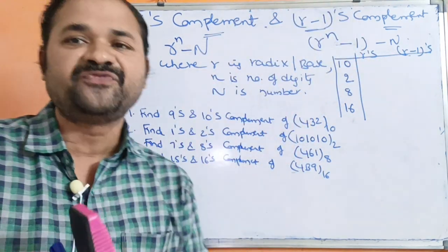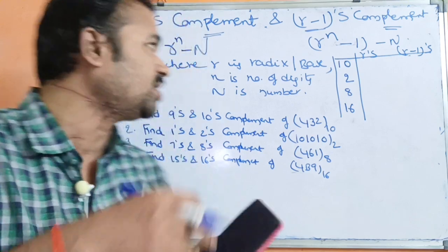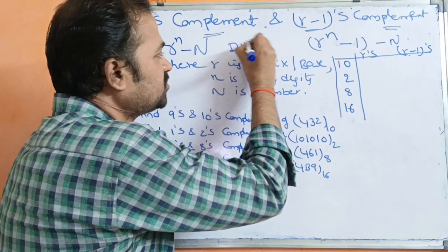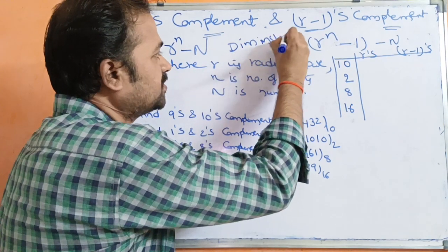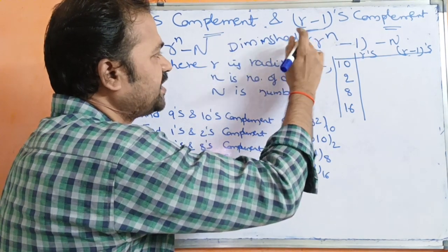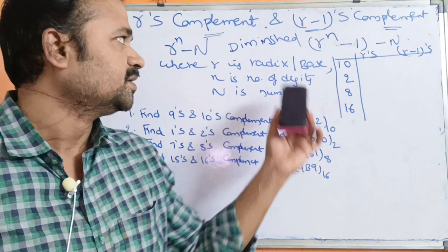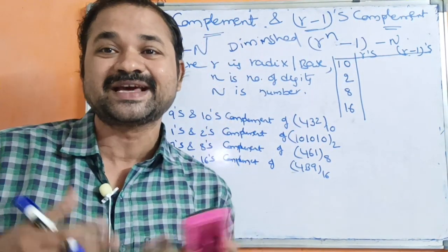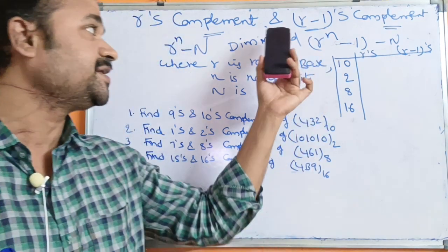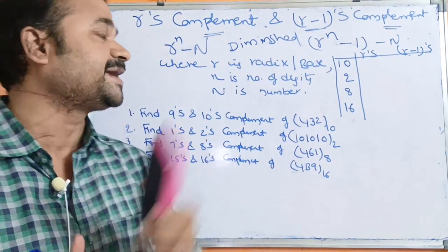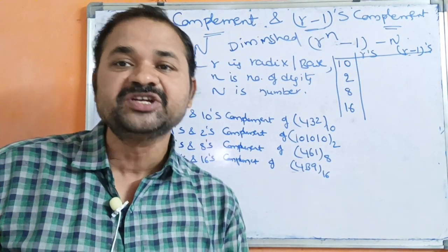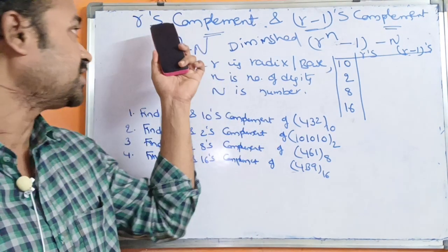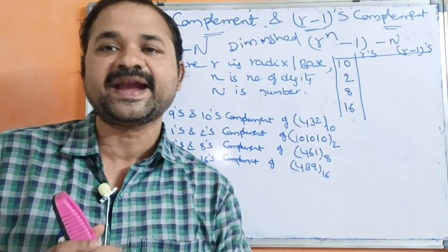R-1's complement can also be called the diminishing radix complement — 'diminishing' means reducing, so here we are reducing by 1. R's complement is called the radix complement, whereas R-1's complement is called the diminishing radix complement.